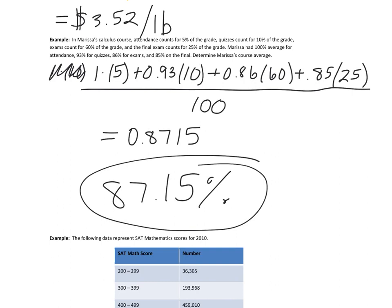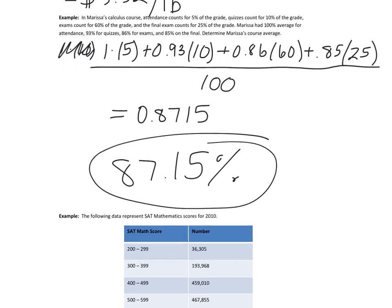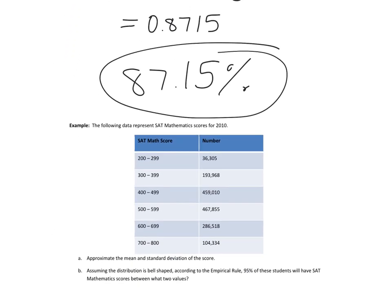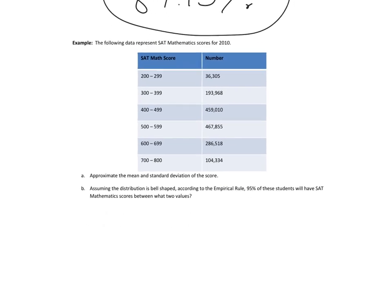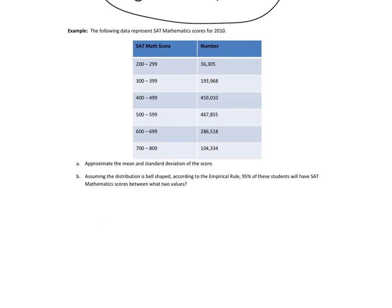So moving on down. We have another example. We have group data. This is taking us actually back to our first two examples. But we're going to use this to show us how the calculator works. And then we get to use the empirical rule as well. So we're going to do that in the video down below.